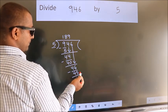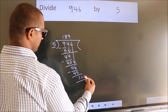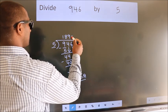No more numbers to bring it down. So we stop here. This is our remainder. This is our quotient.